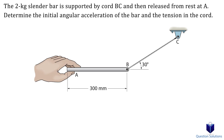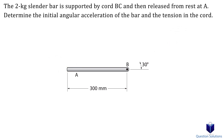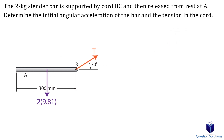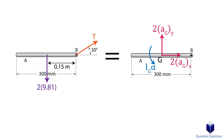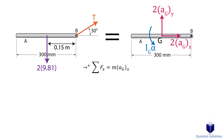Let's look at this question where a slender bar is released from rest. We need to find the initial angular acceleration and the tension in the chord. The first step is to draw a free body diagram — we only have the weight and the tension. Next, we draw a kinetic diagram with the mass times acceleration at the center, broken into x and y components, plus a moment about the center. For the x-axis equation, the left side has the x component of tension and the right side has mass times acceleration in x.